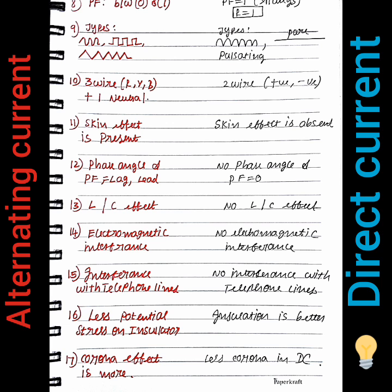The corona effect is higher in AC current. In DC, the corona effect is less.